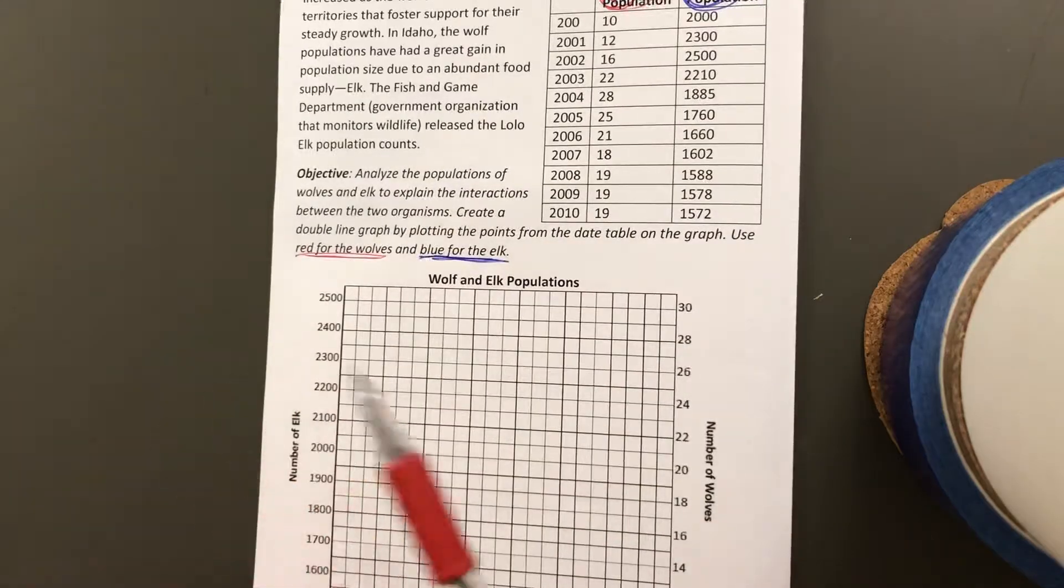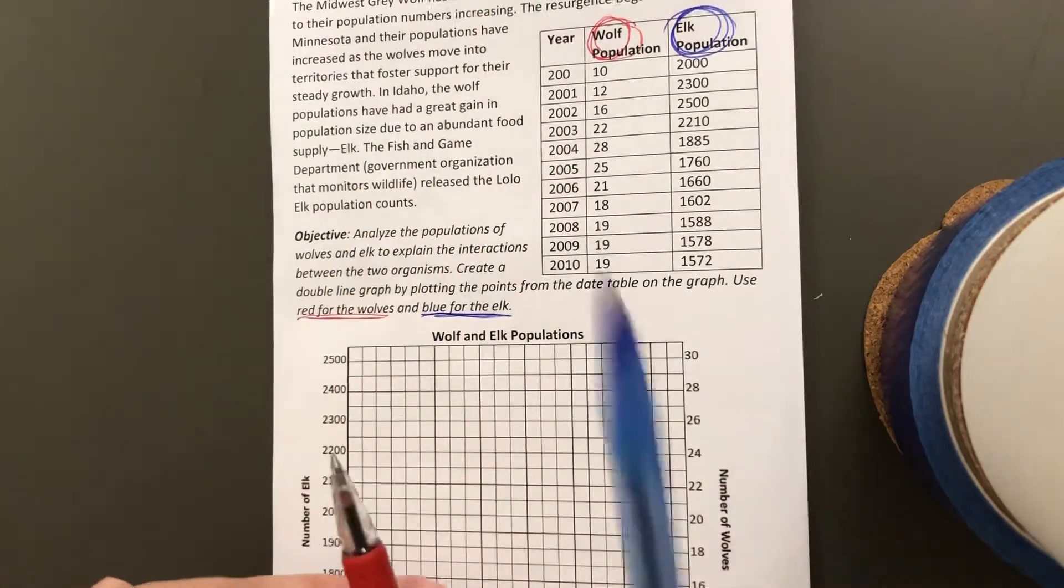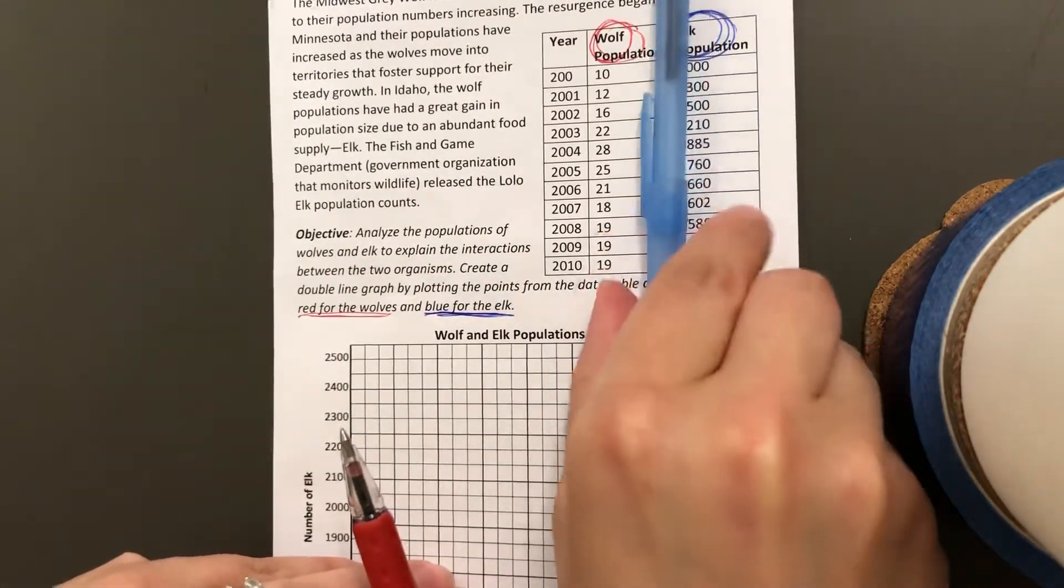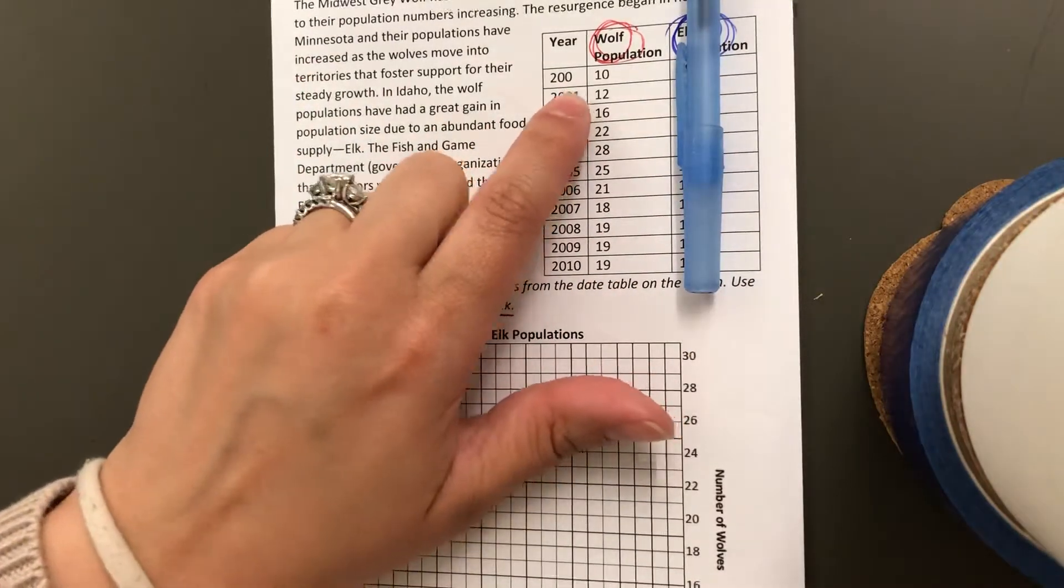To make a double line graph, the first thing you need to do is ignore one of the sets of data because you're going to plot one of the sets of data first. So I'm going to start with the wolves.